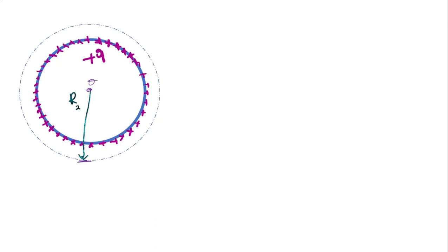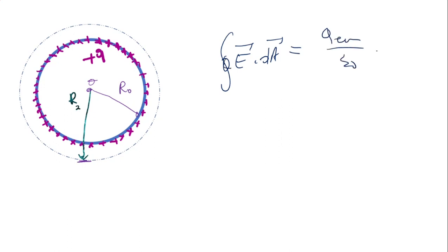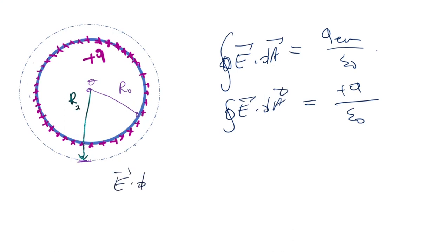Now let's find the electric field outside the spherical shell. This is the origin of the sphere, and this is the radius R2, which we call R0. By definition, Gauss's law says the integral over the enclosed area of E dA equals Q enclosed over epsilon zero. The enclosed area is the dashed area you see outside, and this dashed area encloses the total charge Q.